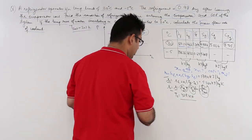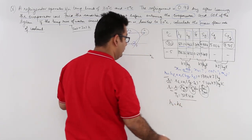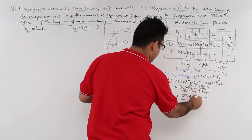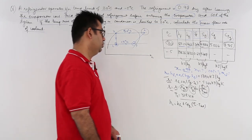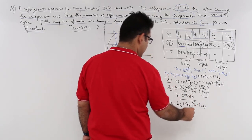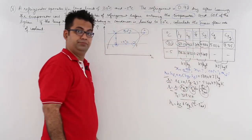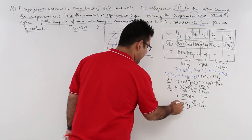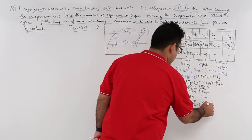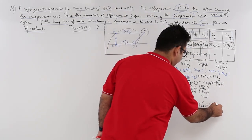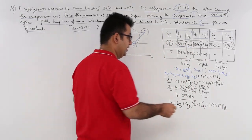After finding T2, let us find H2. H2 = HG2 + CPG2 · (T2 − T_sat). T2 is now known, CPG2 is given, and HG2 = 1466 kJ/kg. Putting in the values, H2 comes out to be approximately 1554 kJ/kg.